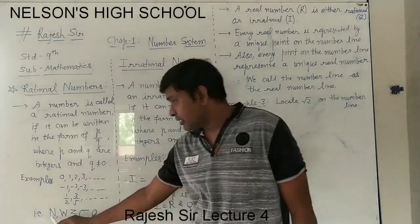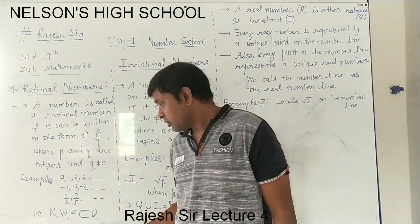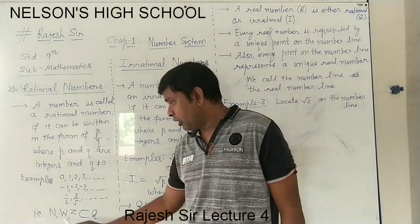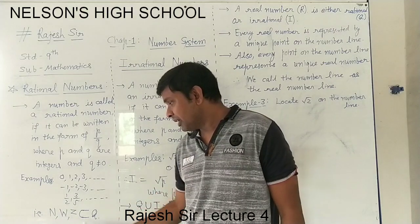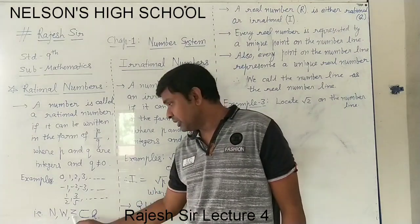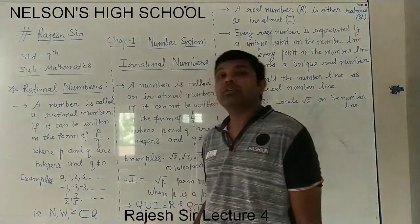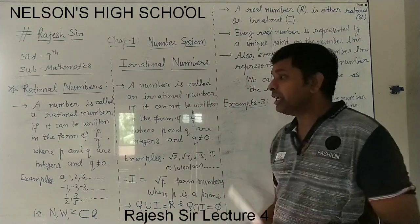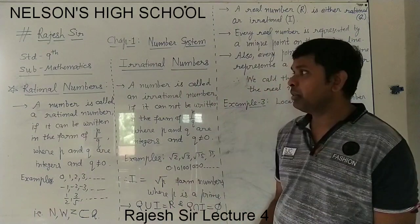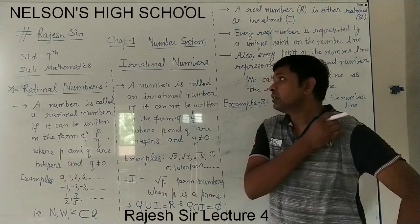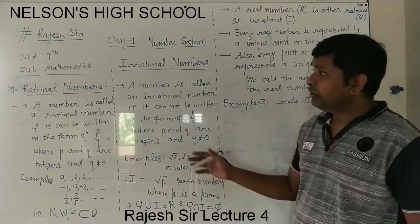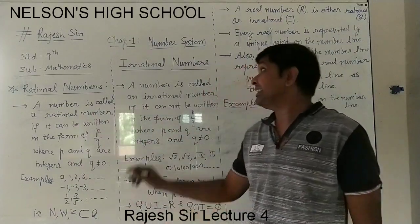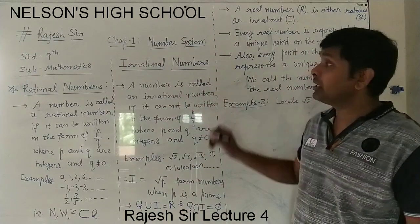So all natural numbers are rational numbers, all whole numbers are rational numbers, and all integers are also rational numbers. This is the rational number definition with examples understood. So if p upon q form is called rational number, what is an irrational number? That is the topic we can now understand easily.